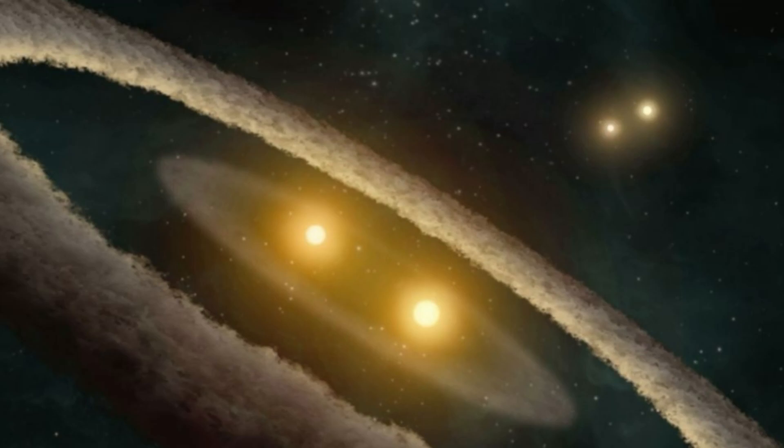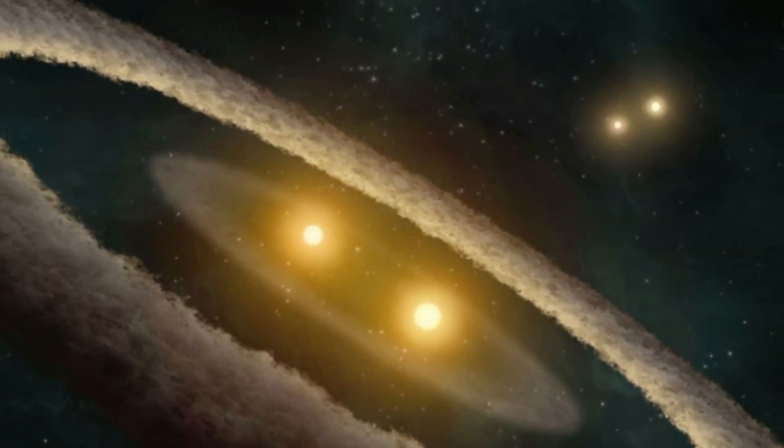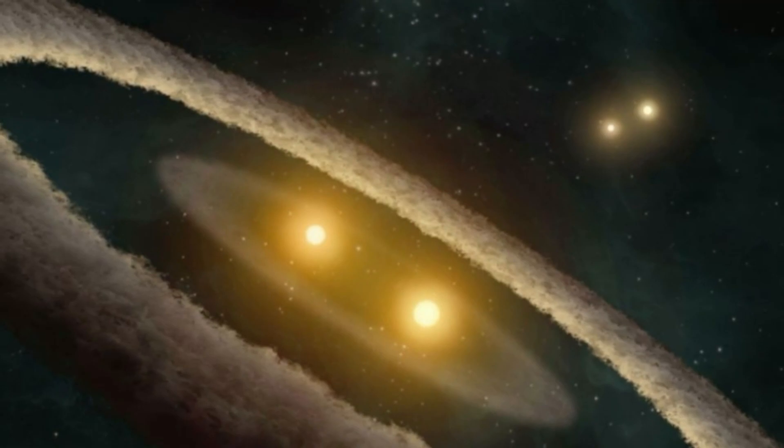The binary pair of stars at the heart of TIC 470710327 has a combined mass of around 12 times the sun, and it takes just over one day for the two stars to orbit one another.